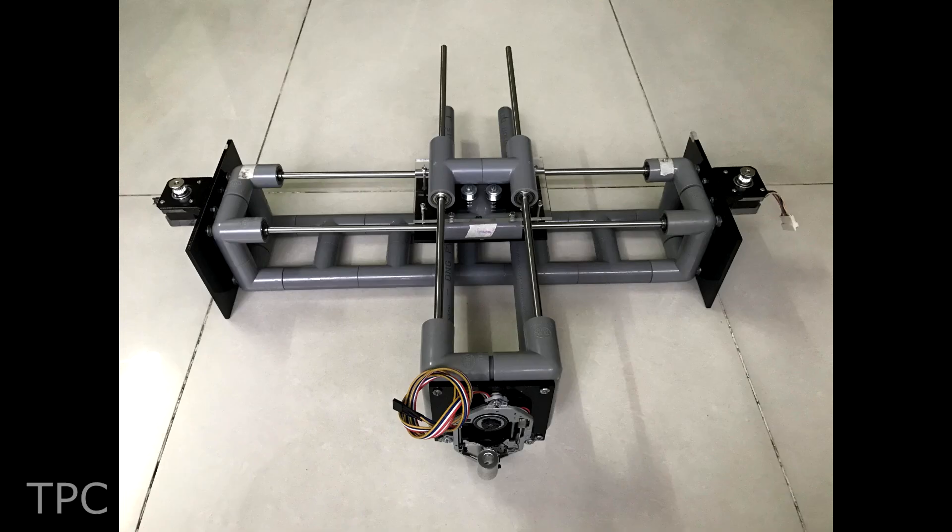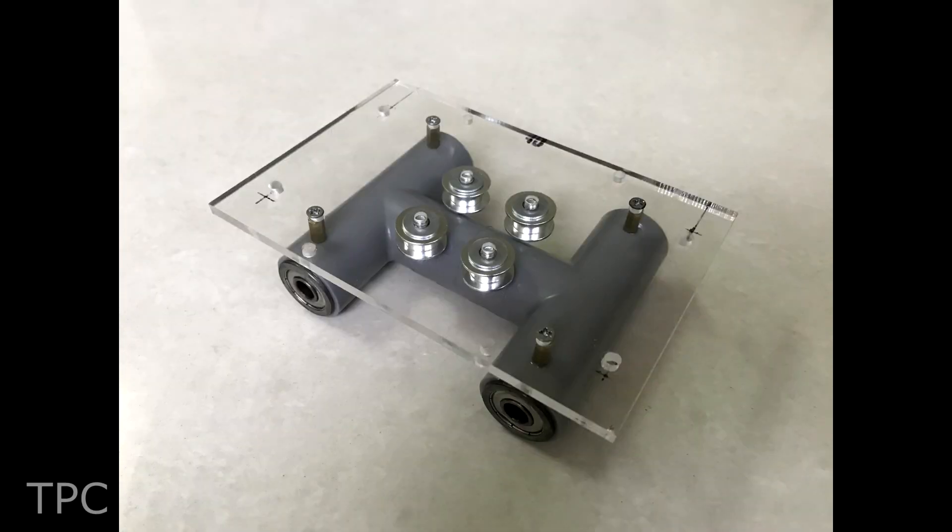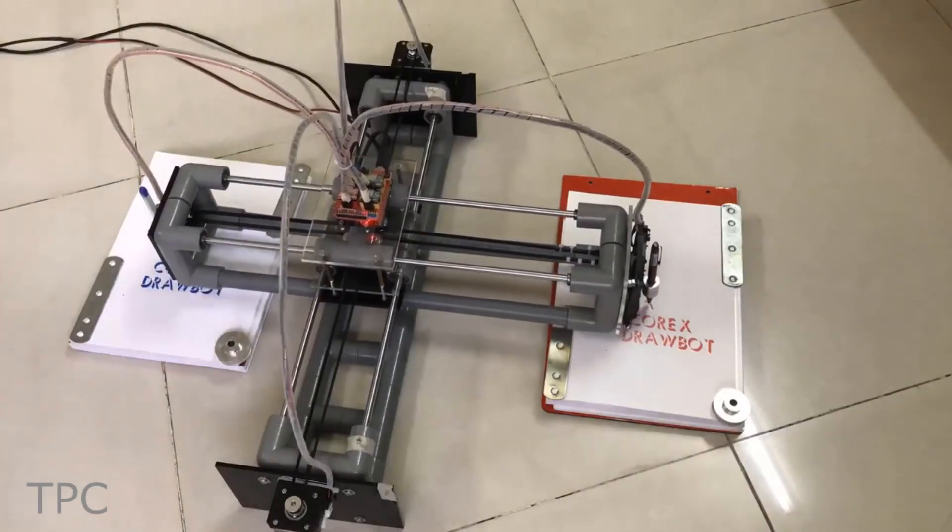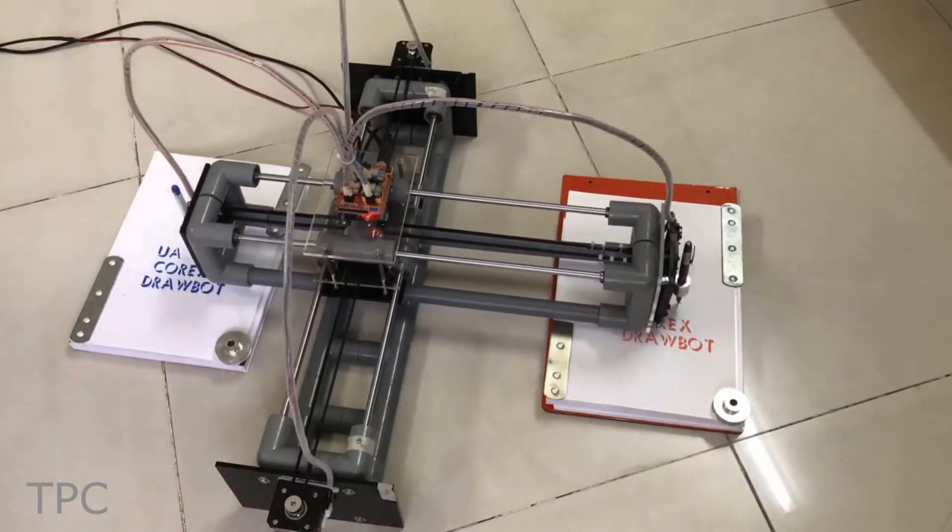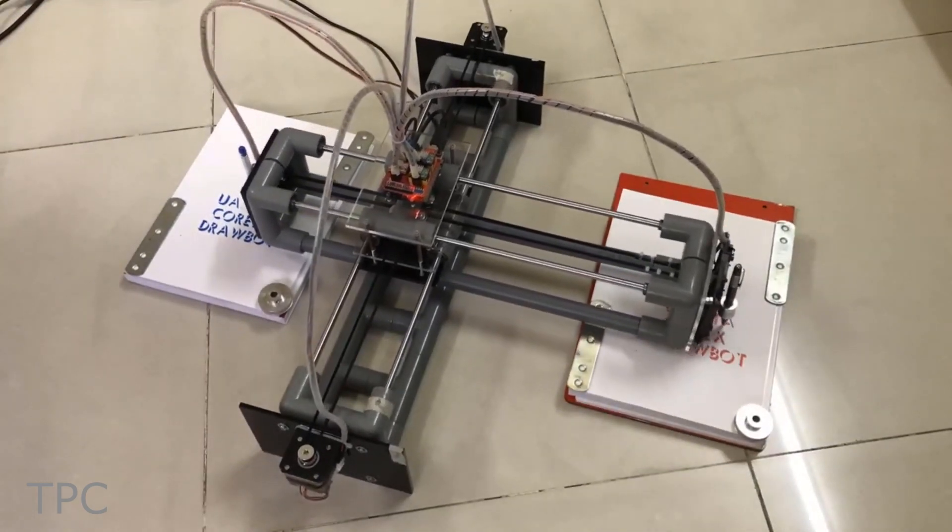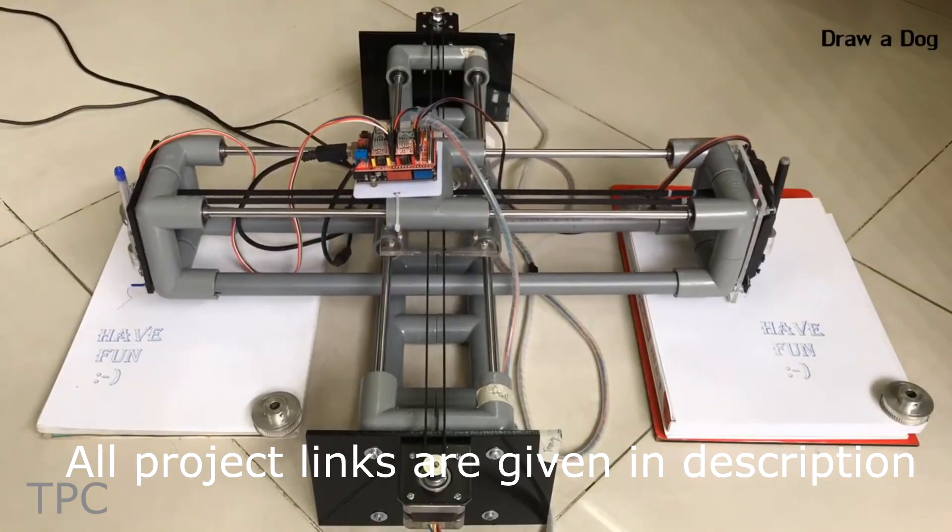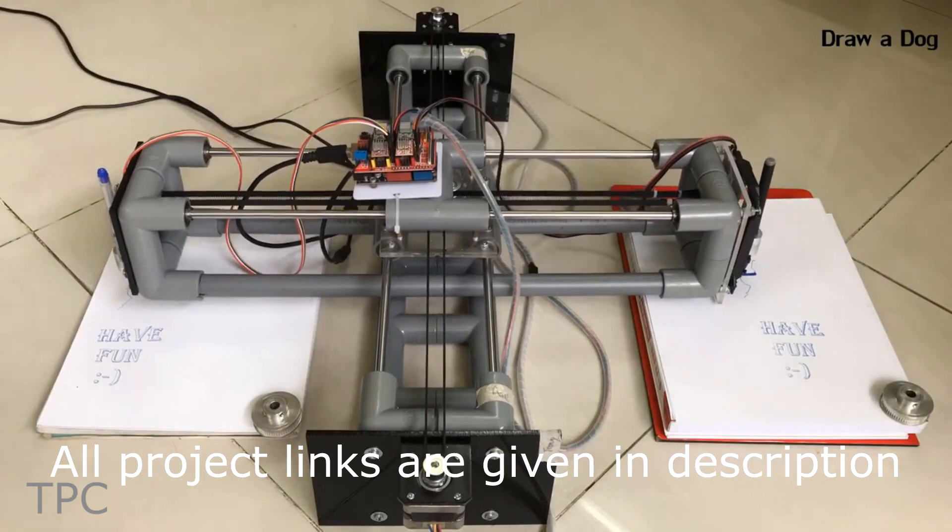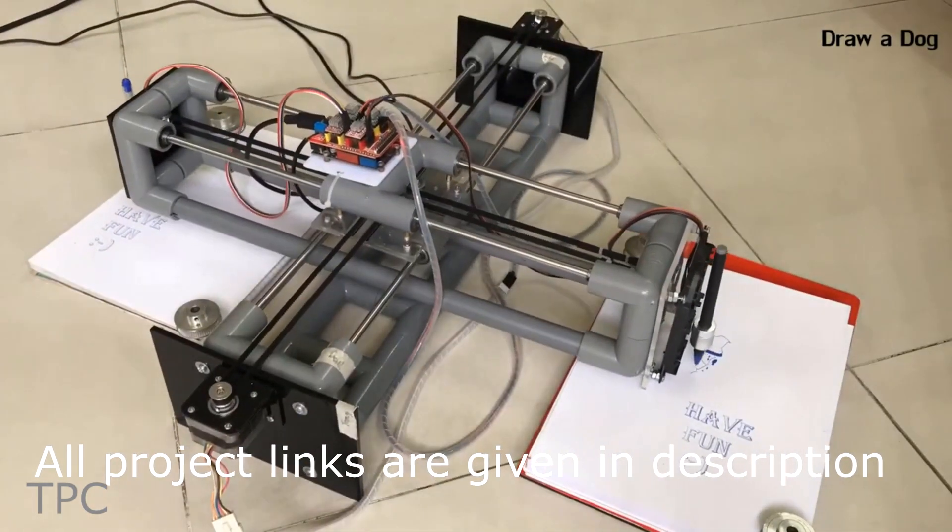The frame of this plotter is made from PVC pipes, while the supports are made of acrylic sheets. It has a working range of 320 mm on the X-axis and 350 mm on the Y-axis. This plotter requires four stepper motors and four A4988 motor drivers to run them.